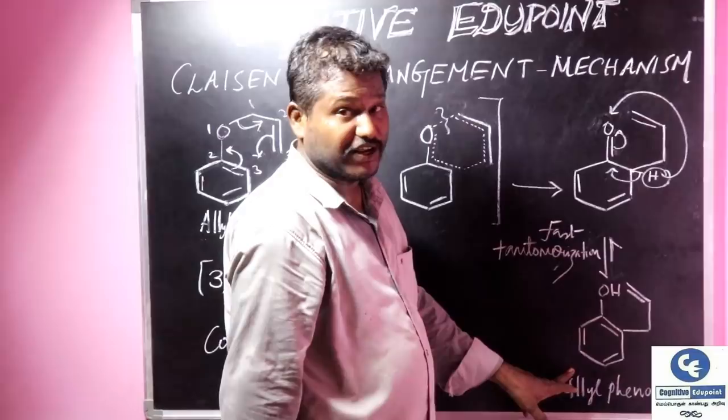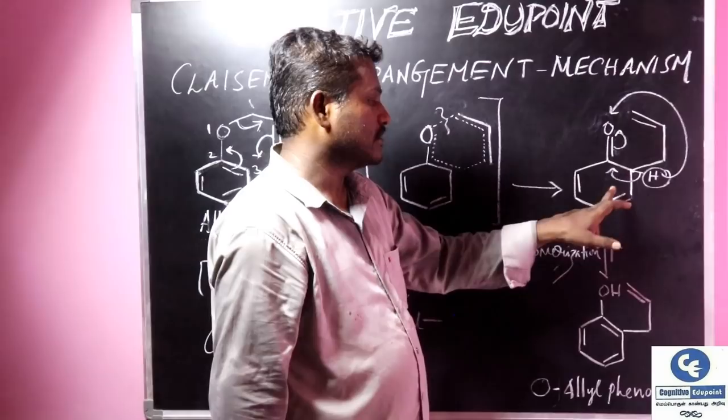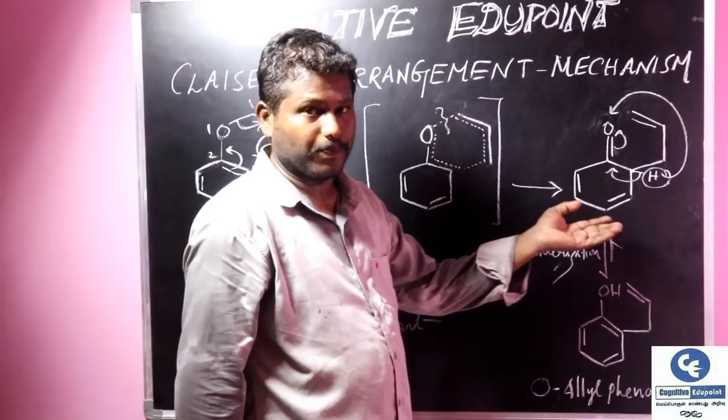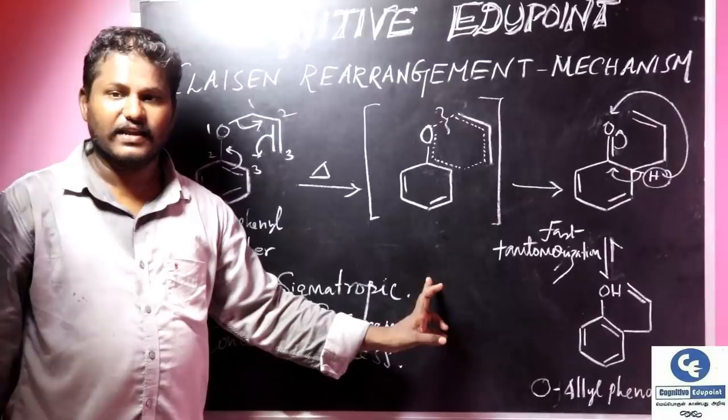The phenol form will be highly stable because it is aromatic and conjugated. That is why the equilibrium will be more towards allyl phenol than the keto form. This mechanism is further confirmed by trapping this intermediate by a Diels-Alder reaction.